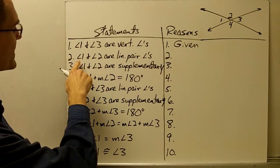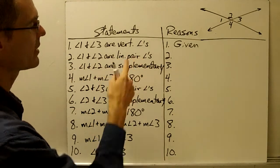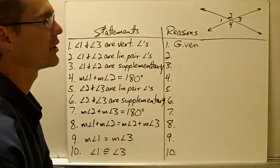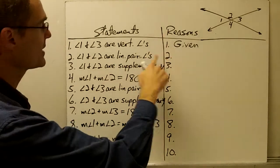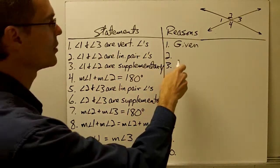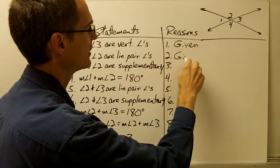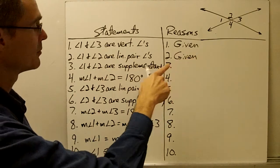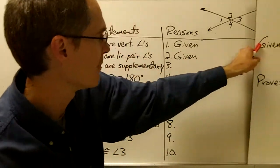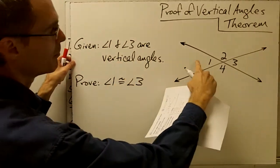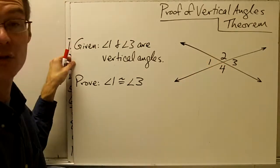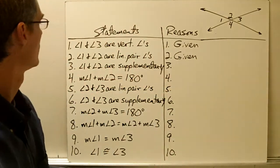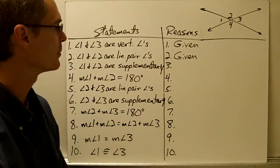Statement 2: angle 1 and angle 2 are linear pair angles. I can look over here in my picture and see that angle 1 and angle 2 are indeed linear pair angles. The reason I'm giving for this statement is also 'given' — this information wasn't given in the written given statement, but it is given to me in the picture that accompanies this proof.